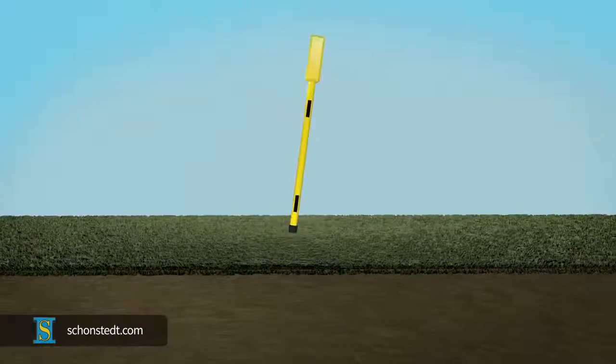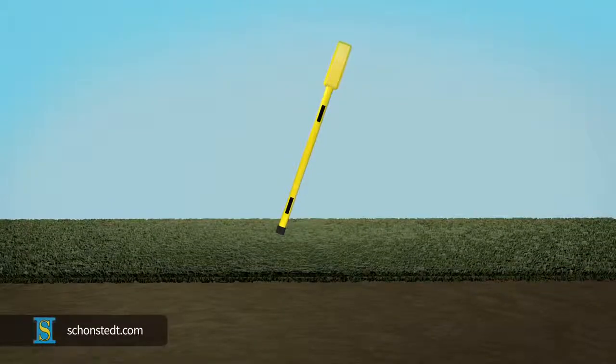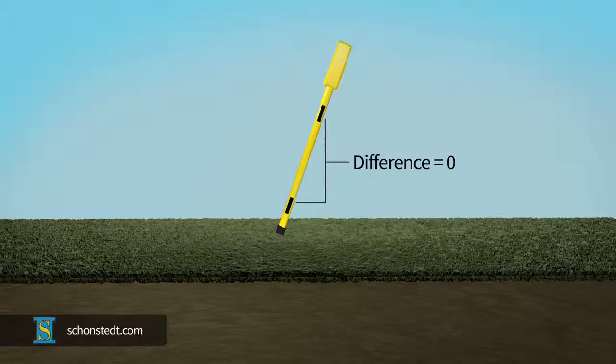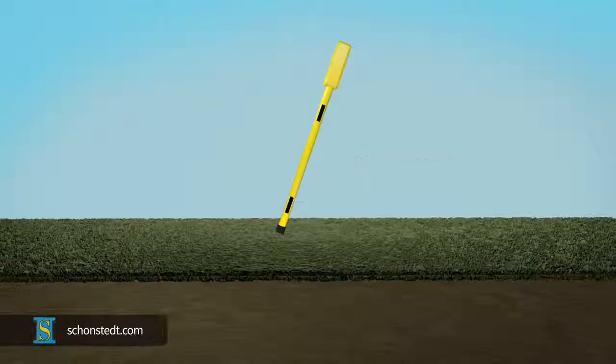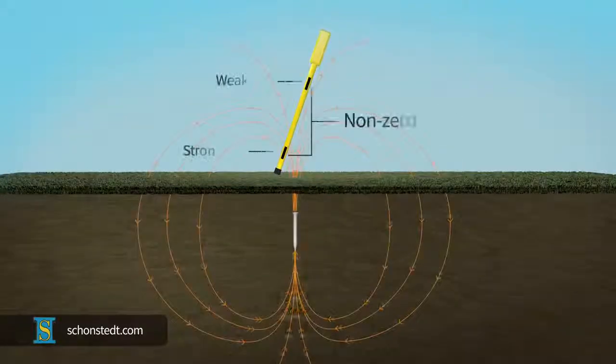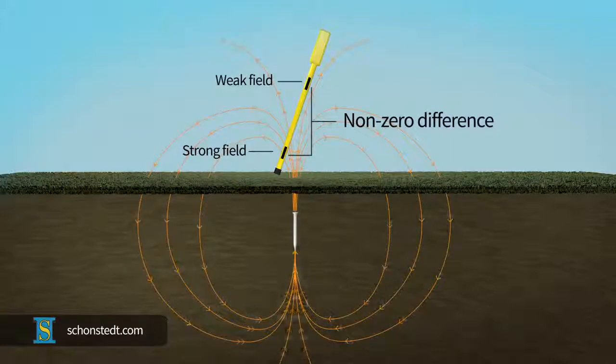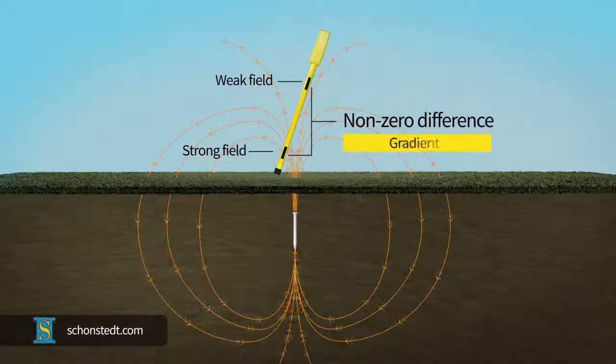Schonstedt magnetic locators operate on the principle of detecting the difference in the magnetic field present at two sensors spaced a fixed distance apart. In the absence of a buried object, the field at both sensors is the same. The presence of an object made of iron or steel results in a difference between the magnetic field at the top and bottom sensors. That difference is called a gradient.